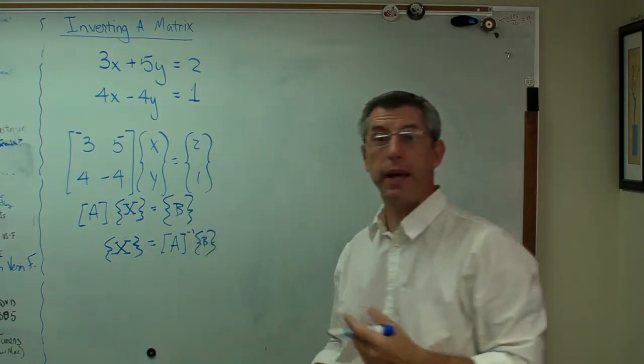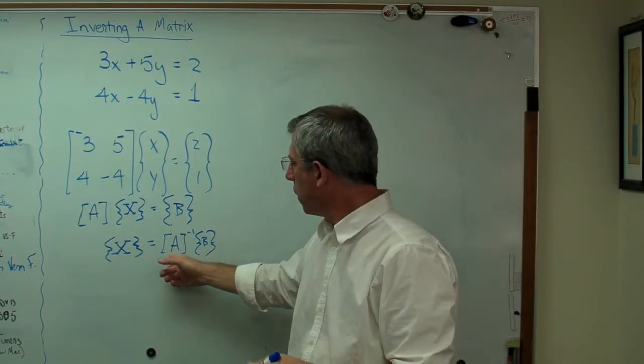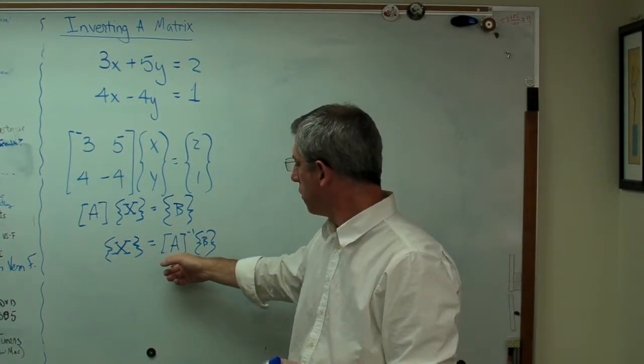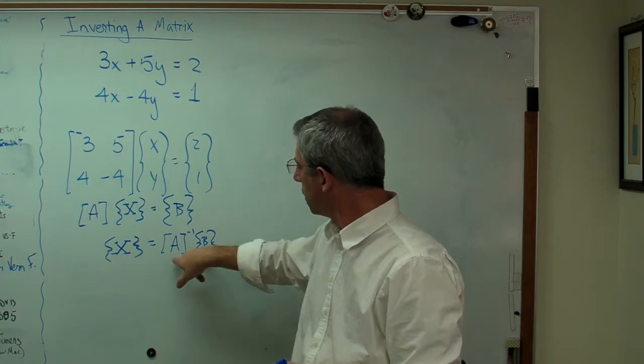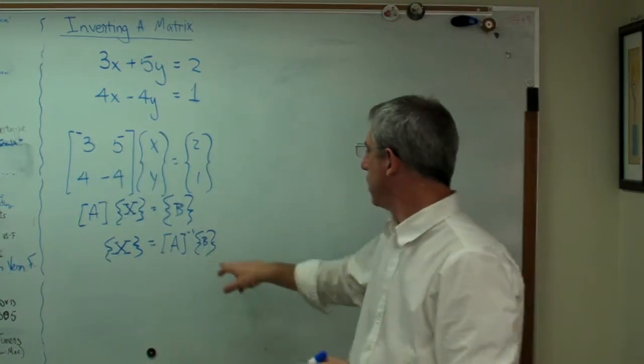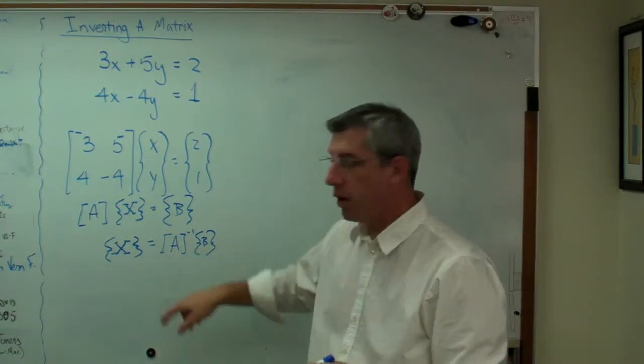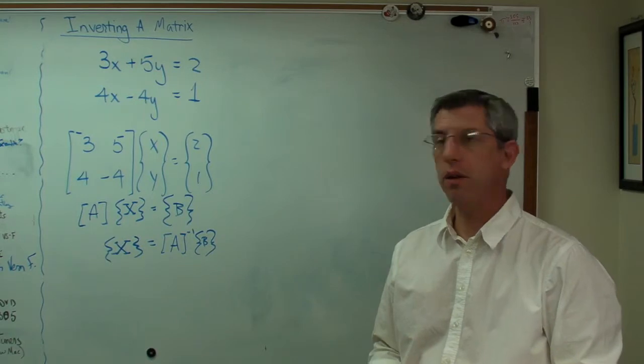And there we are. That's how this is going to look. Now for reasons that I don't have time to go into here, we pre-multiply. That A goes on the front of B like this. But when I multiply that matrix, the inverse of A times B, I'm going to get that. So all I've got to do now is figure out how to make the inverse of A.